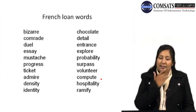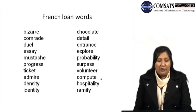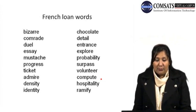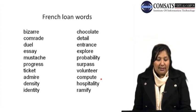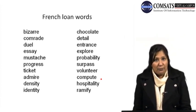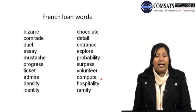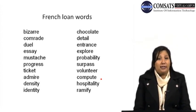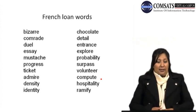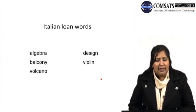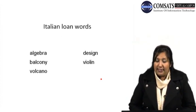French loan words made a significant contribution to English. Words like bizarre, chocolate, comrade, detail, dual, entrance, essay, explore, moustache, probability, progress, surpass, ticket, volunteer, admire, compute, density, hospitality, identity, and ramify are direct additions from French into English — neither taken from Latin nor from Greek. These are words we use very easily to this day. Italian loan words include: algebra, balcony, volcano, design, and violin.